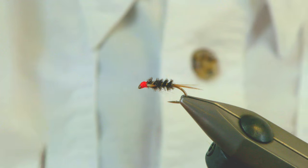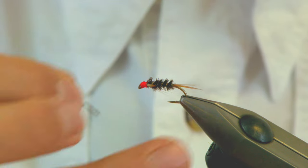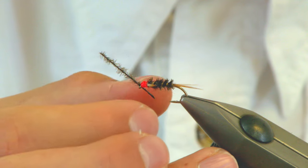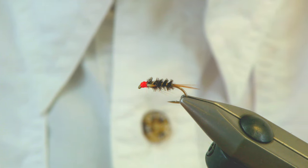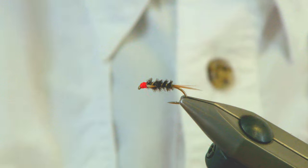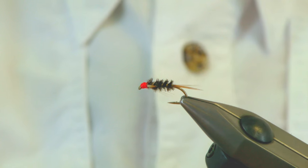And what you can do then is with your waste peacock herl from earlier, you just pop it through the eye. And that will clean out all your super glue. And there's your Diawl Bach.